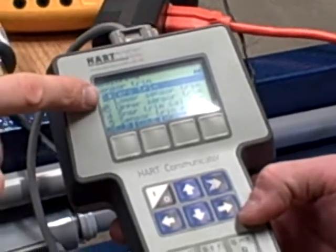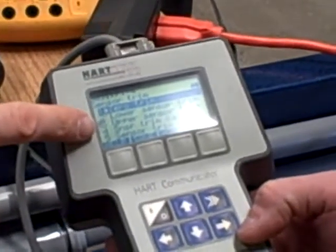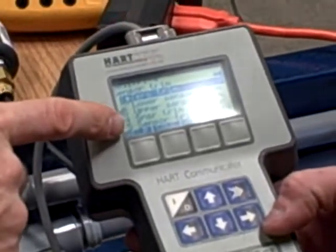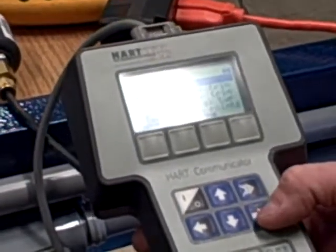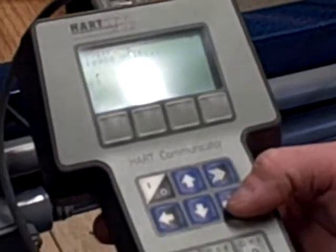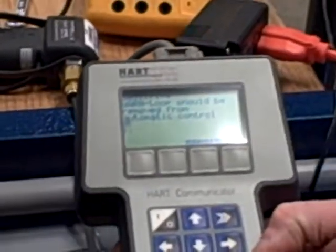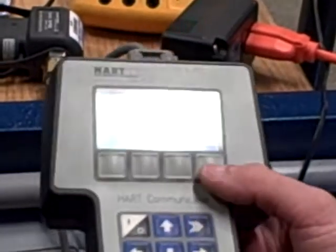We have zero trim, lower sensor, upper sensor, sensor trim calibration type, and sensor trim points. Let's do a zero. Now notice that we have zero pressure applied to our transmitter. We have vented the transmitter so there's no applied air pressure to it. So it's appropriate to do a zero trim.